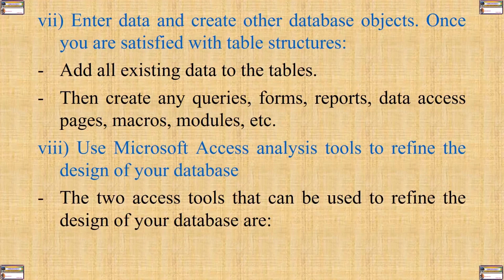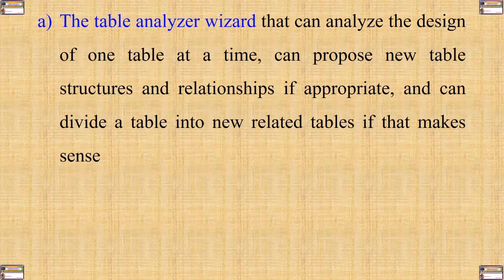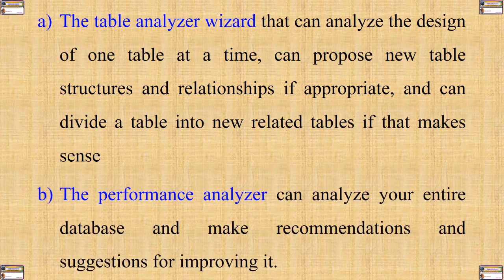The two Access tools that can be used to refine the design of your database are: Number one, the Table Analyzer Wizard. This wizard analyzes the design of one table at a time and can propose new table structures and relationships if appropriate. You can also use it to divide a table into new related tables if that makes sense. The second tool is the Performance Analyzer, which can analyze your entire database and make recommendations and suggestions for improving it.